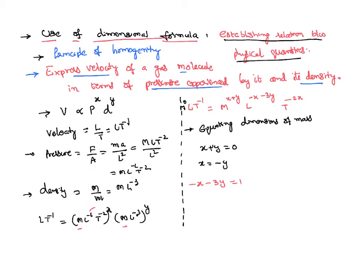And then equating the dimensions of time: -2x = -1, so x = 1/2.